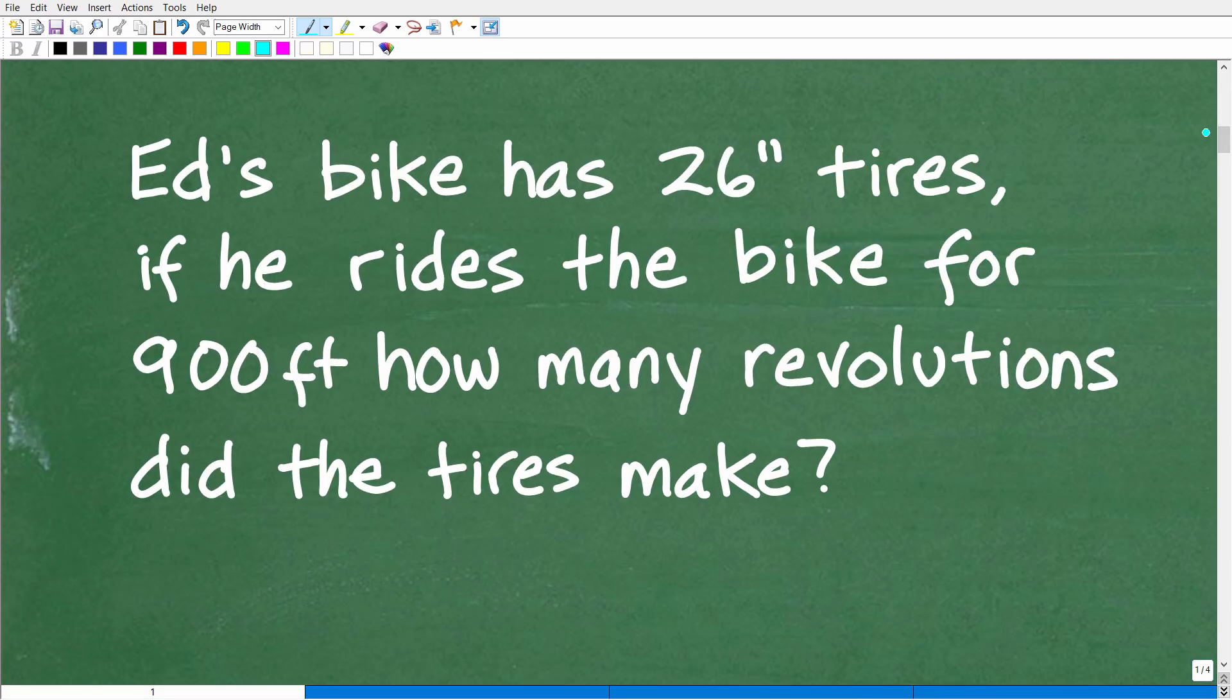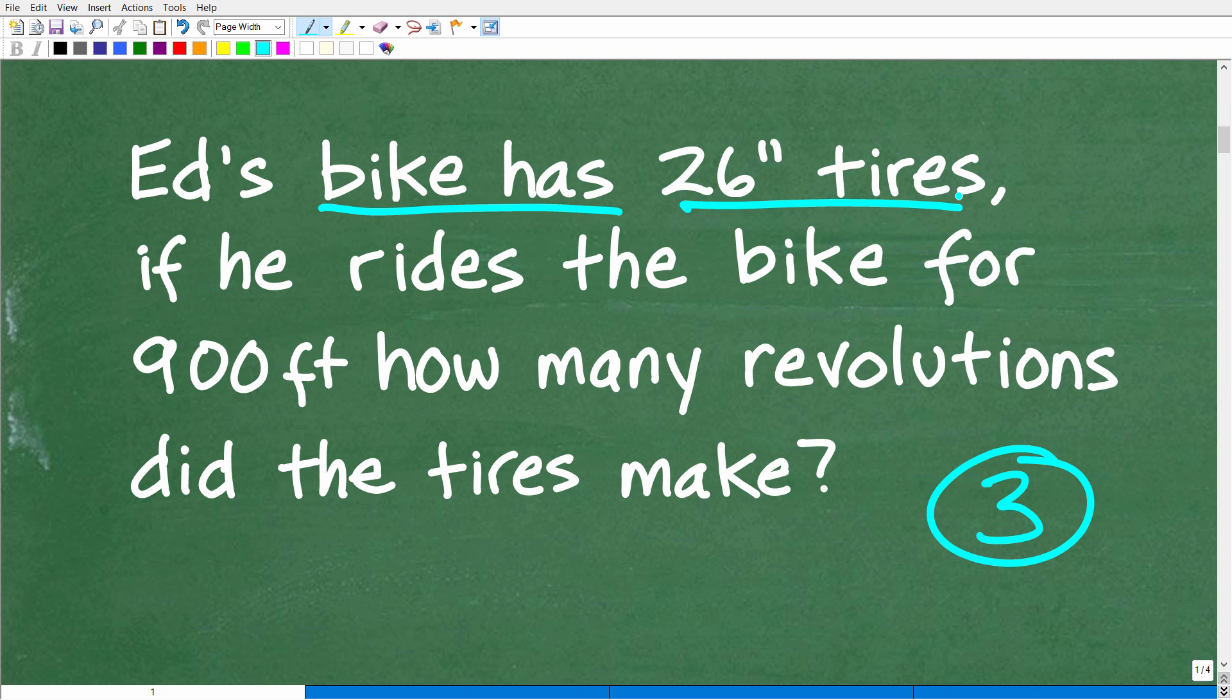First things first. In any math word problem, always use the rule of three: read the problem at least three times before you start doing anything. Patience is a virtue and it is key to be successful in mathematics. Let's review it one more time. Ed has this bike with 26 inch tires. He is going to ride this bike for 900 feet, and we are looking to see how many times the tires turn.